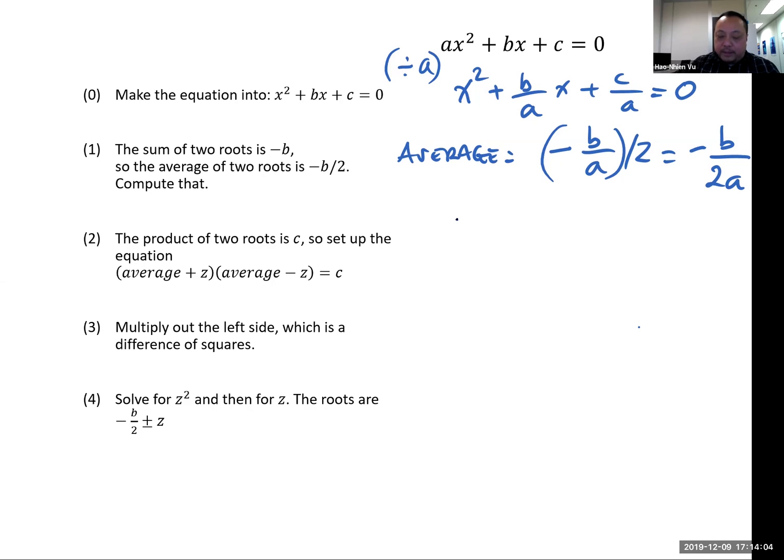You can do that manually. But I want to point your attention to this expression right here. The average is negative b over 2a. So you have a parabola like this. And the average is right here. The parabola might be right side up, upside down. If it's upside down, then the average is right here at the highest point.